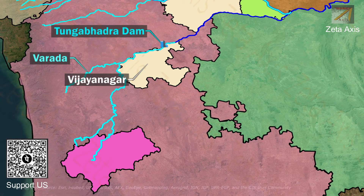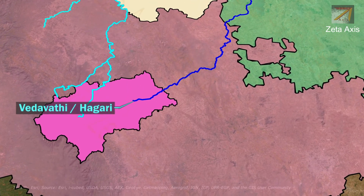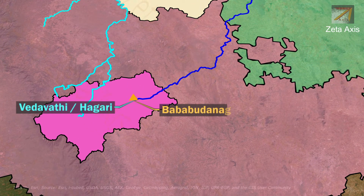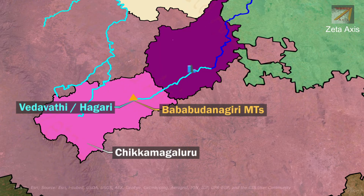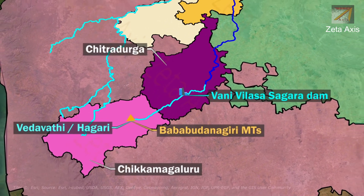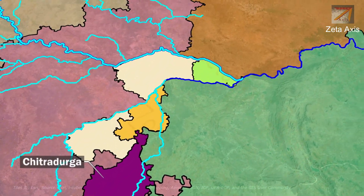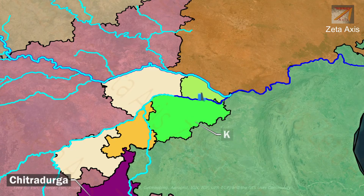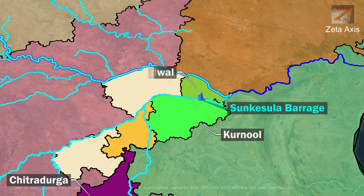The Tungabhadra River flows through Bellary district where the Vedavati River, also called the Hageri River, joins it. The Vedavati River rises from the Baba Budangiri mountains of the Western Ghats in Chikmagalur district of Karnataka, formed by the merger of two streams, Veda and Avati. Vani Vilasa Sagar Dam is constructed on the Vedavati River in Chitradurga district of Karnataka. The Vedavati River flows through Andhra Pradesh and returns to Bellary of Karnataka where it meets the Tungabhadra River. The Tungabhadra River then enters Andhra Pradesh in Kurnool district where the Sankesula Barrage is constructed, and flows further to meet the Krishna River in Jogulamba Gadwal district.